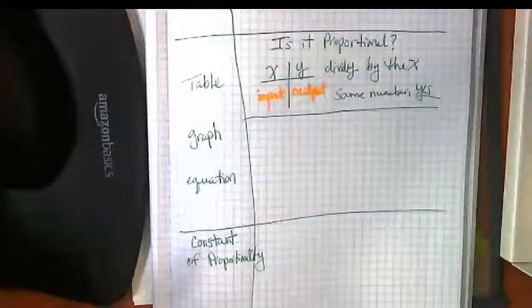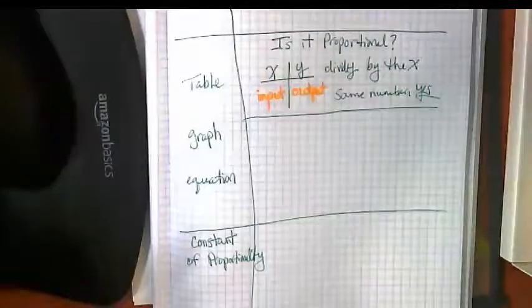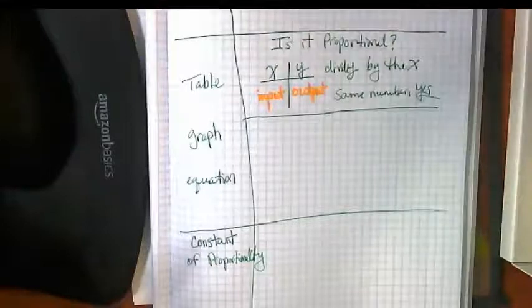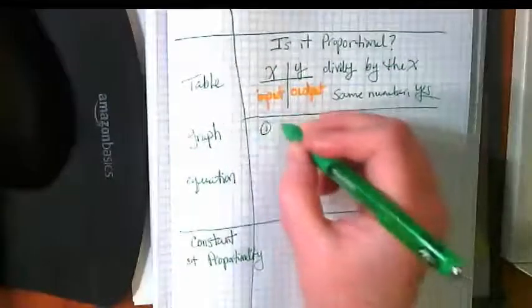The graph, I love the graphs. I think that they have the easiest one to read because you don't have to do any calculating. There's two criteria to find out if it's proportional from a graph. One, is it a straight line?